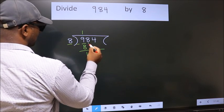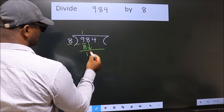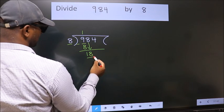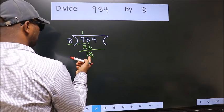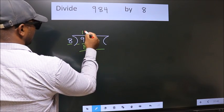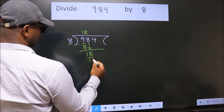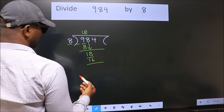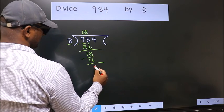After this, bring down the beside number. So, 8 down. So, 18. A number close to 18 in the 8 table is 8 twos, 16. Now, we subtract. We get 2.